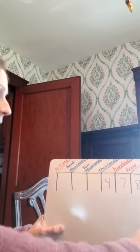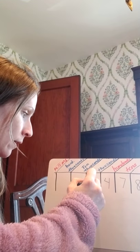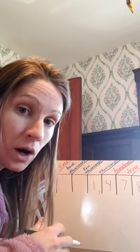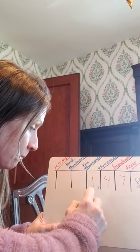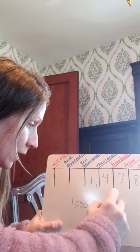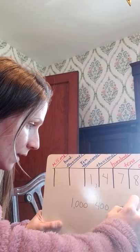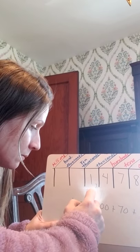If I have one thousand four hundred and seventy-eight, it says it: one thousand plus four hundred plus seventy plus eight. All I'm doing is taking that number and expanding it. That's expanded form in a nutshell. I hope that made sense, and I hope that you're doing great with your math. Bye!